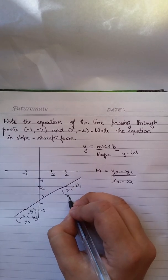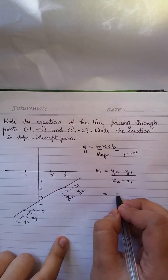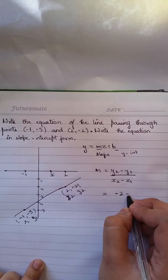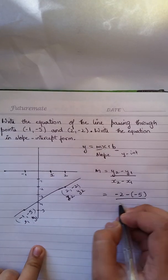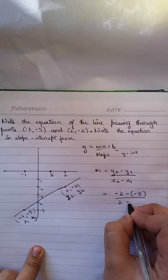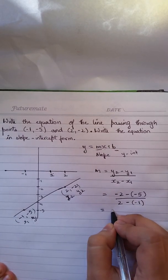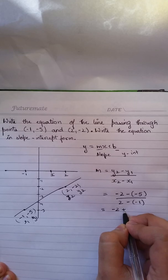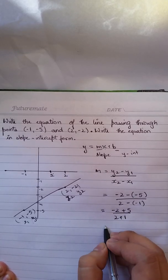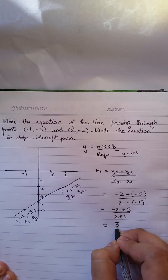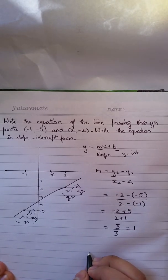So my y2 is -2 minus y1 which is -5, over x2 which is 2 minus x1 which is -1. So I'll get -2 plus 5 over 2 plus 1. So I'll get 3 over 3 which is 1. So my slope is 1.